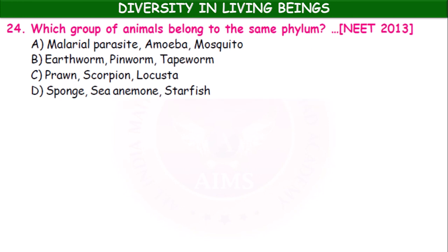Which group of animals belongs to the same phylum — malarial parasite and amoeba; mosquito, earthworm, and pinworm; tapeworm, prawn, scorpion, and locust; or sponge, sea animal, and starfish? Option C — prawn, scorpion, and locust — all belong to the same group: Arthropoda.